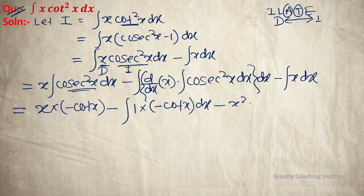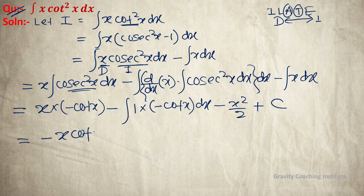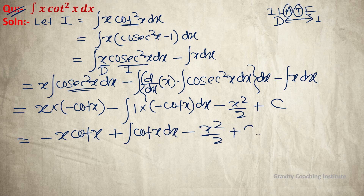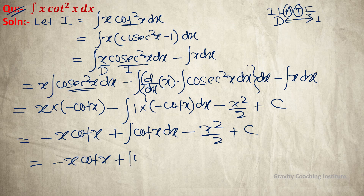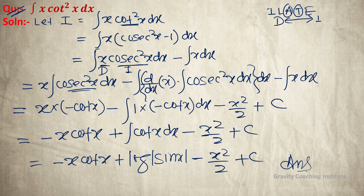Simplifying: minus x cot x, then integrating cot x gives log|sin x|, minus x square upon 2, plus C. So the final answer is minus x cot x plus log|sin x| minus x squared upon 2 plus C.